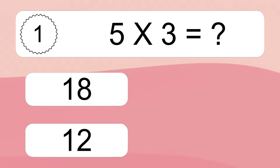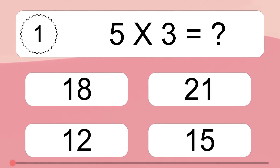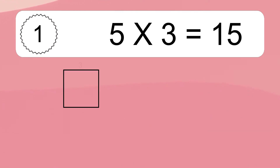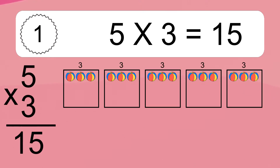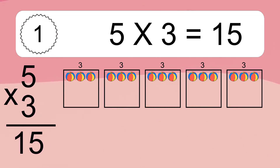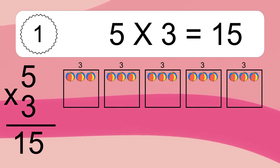5 times 3 equals what? 5 times 3 equals 15. We have 5 boxes, and each box has 3 colorful balls inside. If you count all the balls in all the boxes together, you will have 5 times 3 balls. This equals 15 balls.